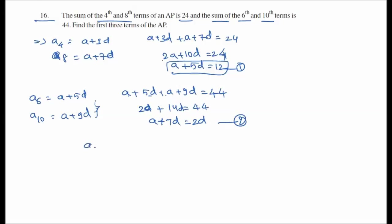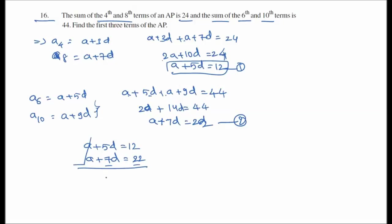Subtracting equation 1 from equation 2: (a plus 7d) minus (a plus 5d) equals 22 minus 12, so 2d equals 10, therefore d equals 5.